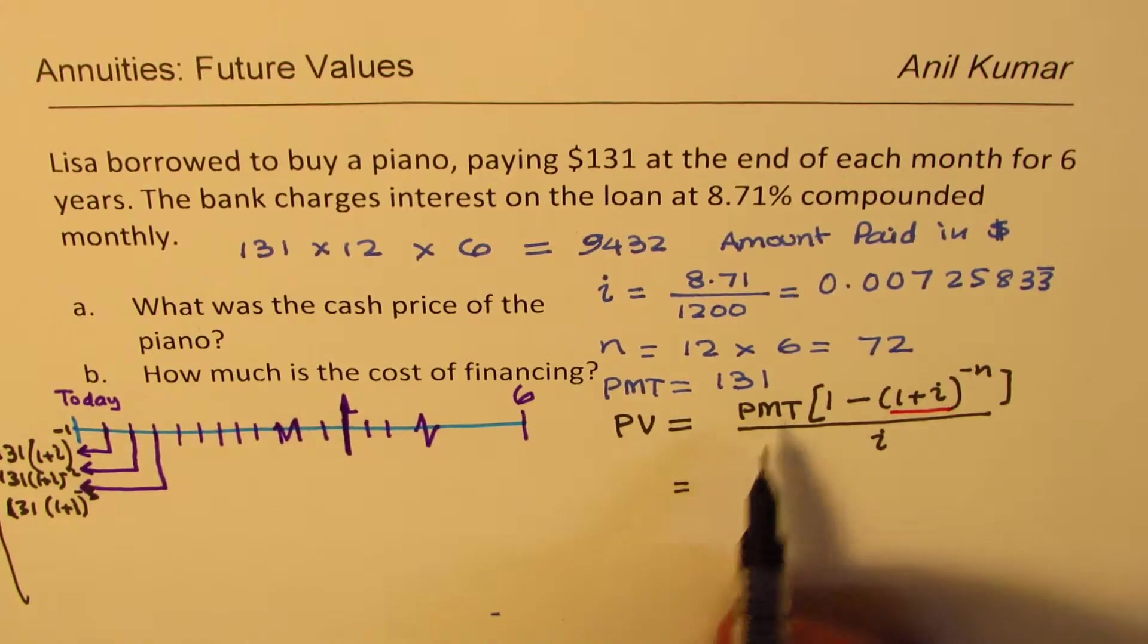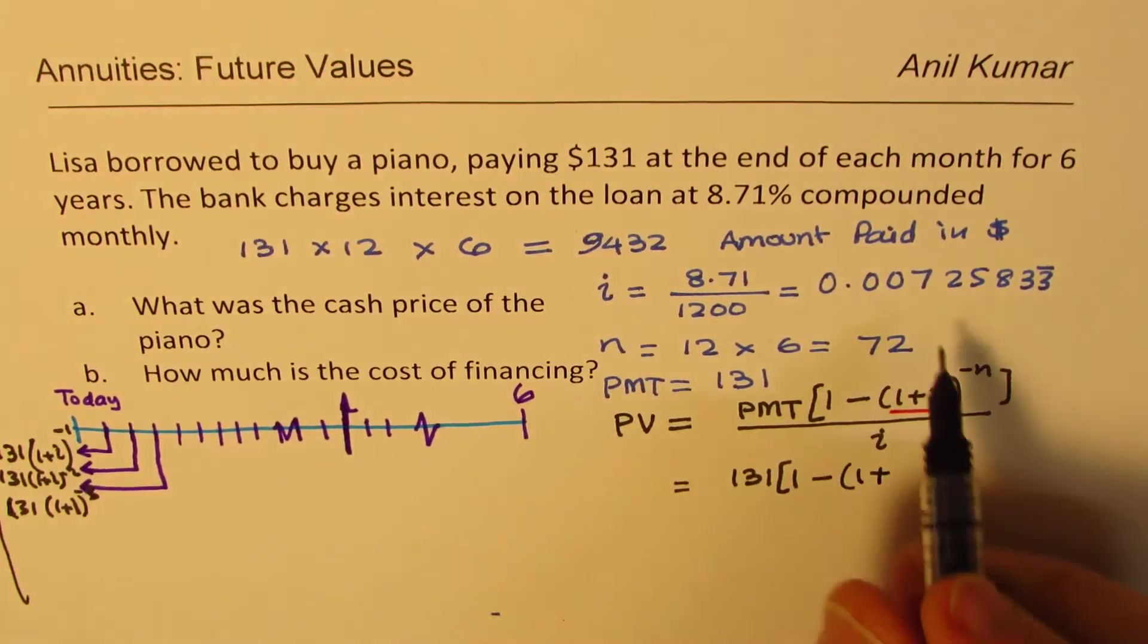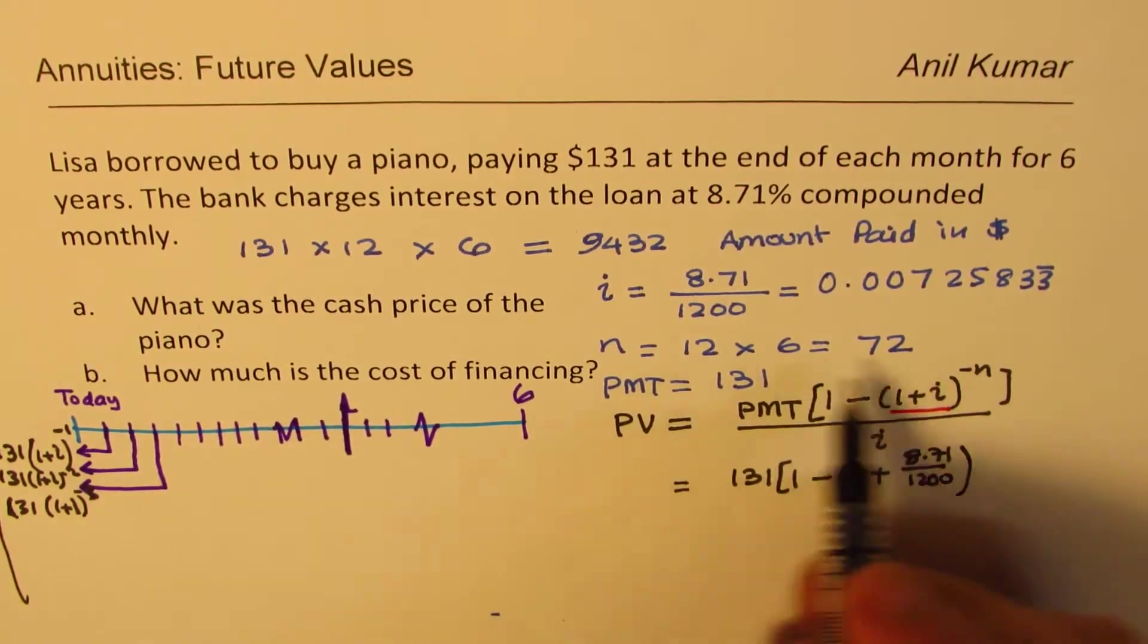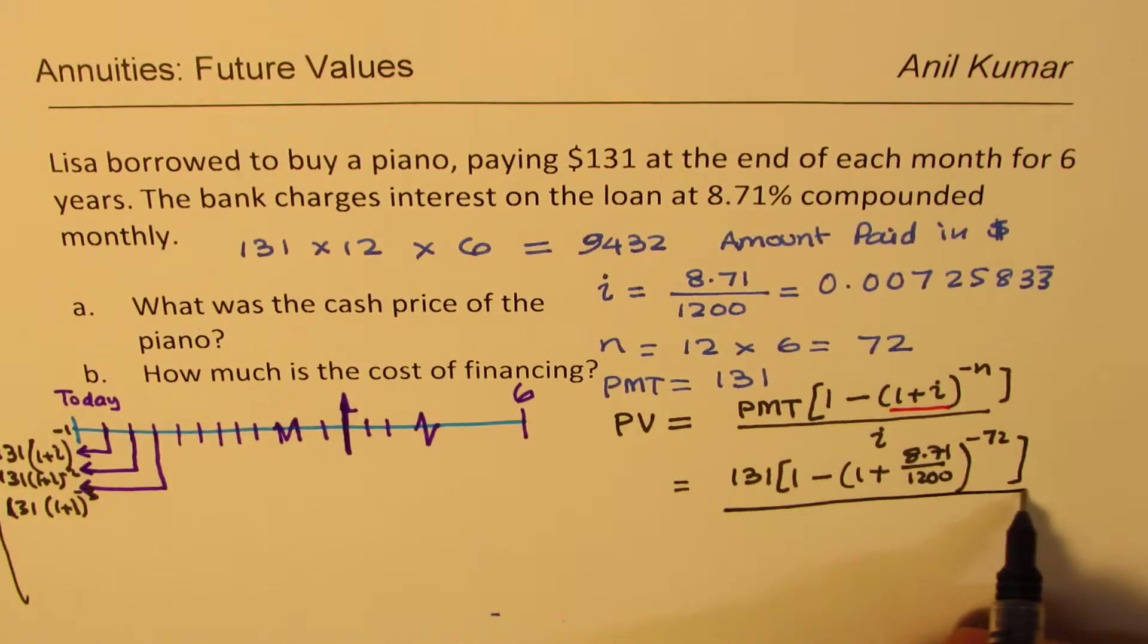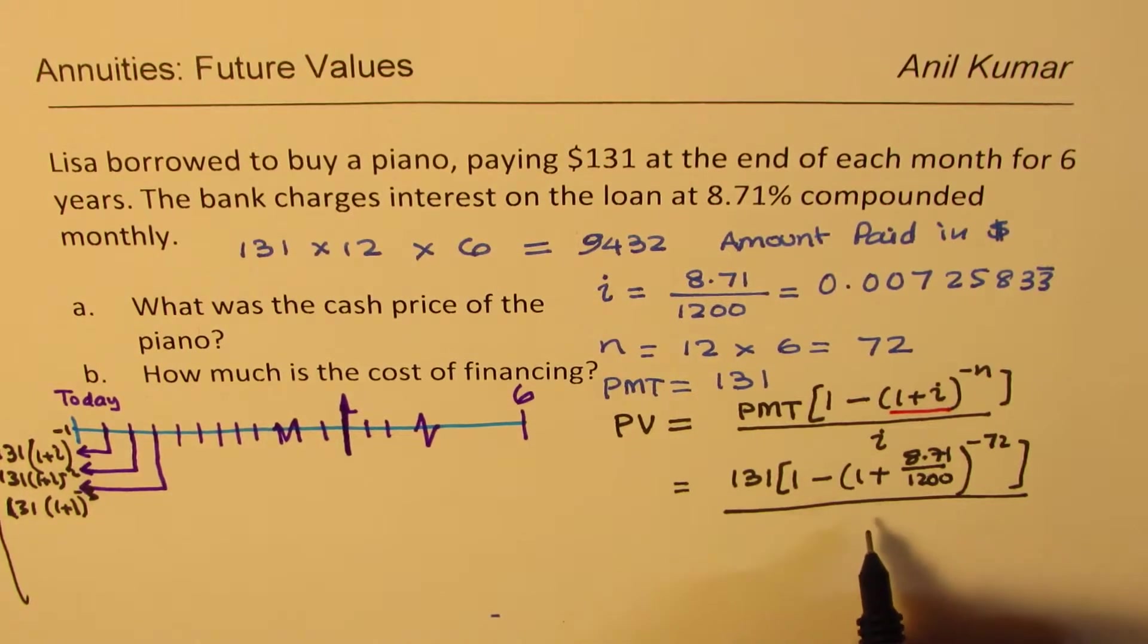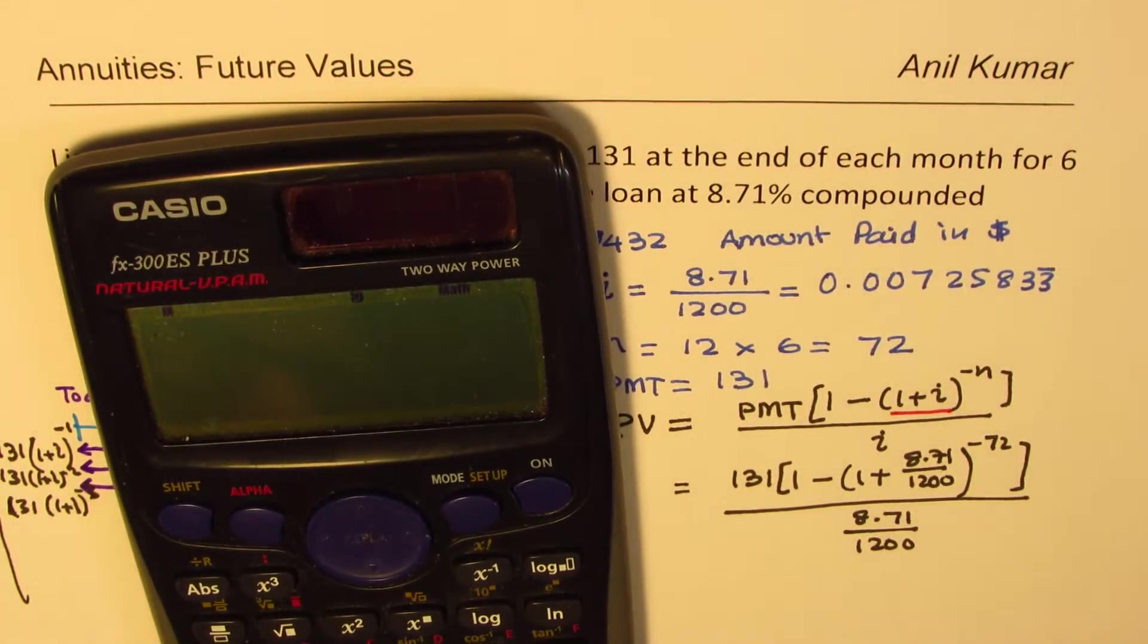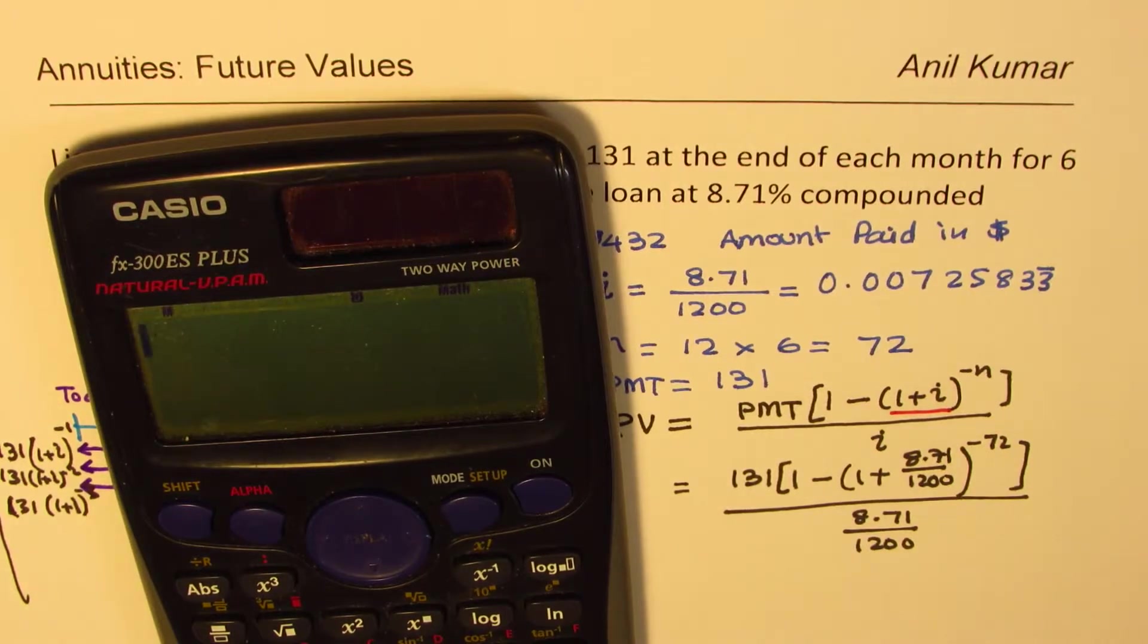So PMT, the monthly payment is 131, 1 minus 1 plus r value. Let me write this as such, 8.71 over 1200 to the power of n, which is 72 with a negative sign, divided by all this, which is 8.71 over 1200, correct? Now we need to use the calculator to find this answer. So now, what should we do? We should actually work from inside out, so 8.71, or we can just use this value. Is that clear? That is simple, right? So let's use this value.